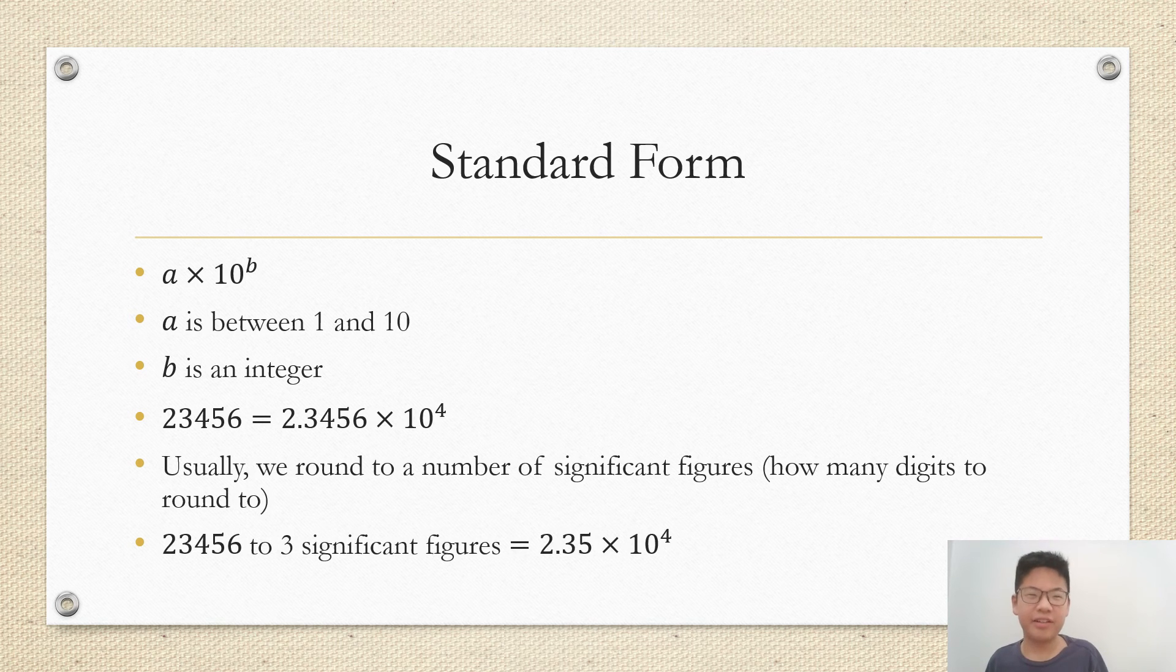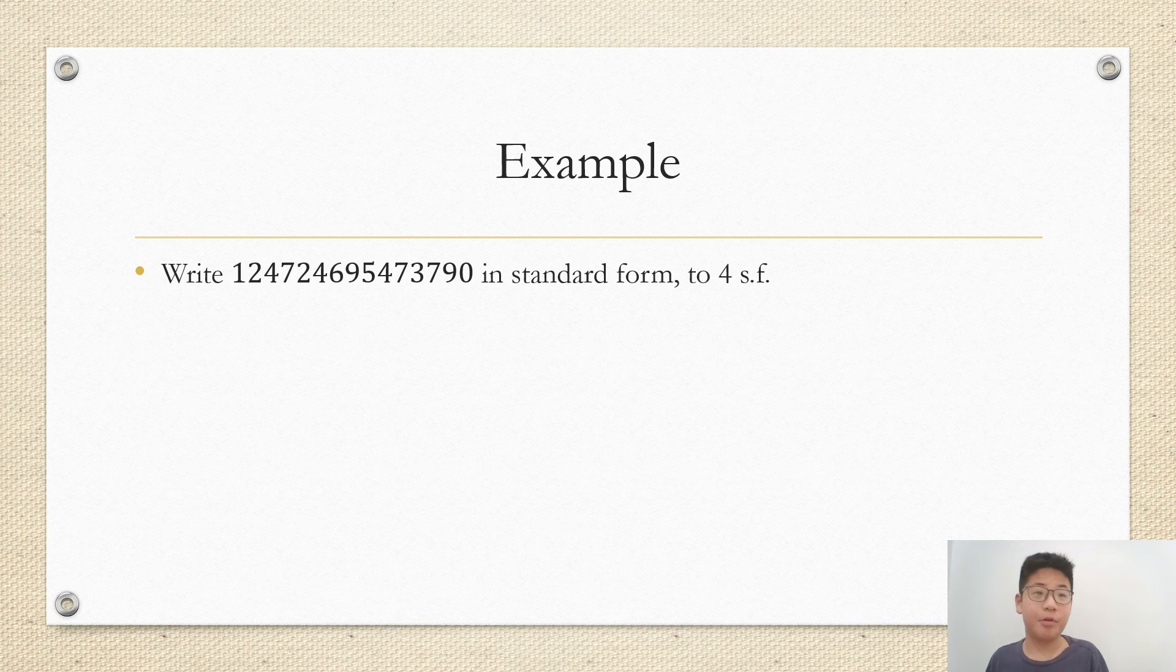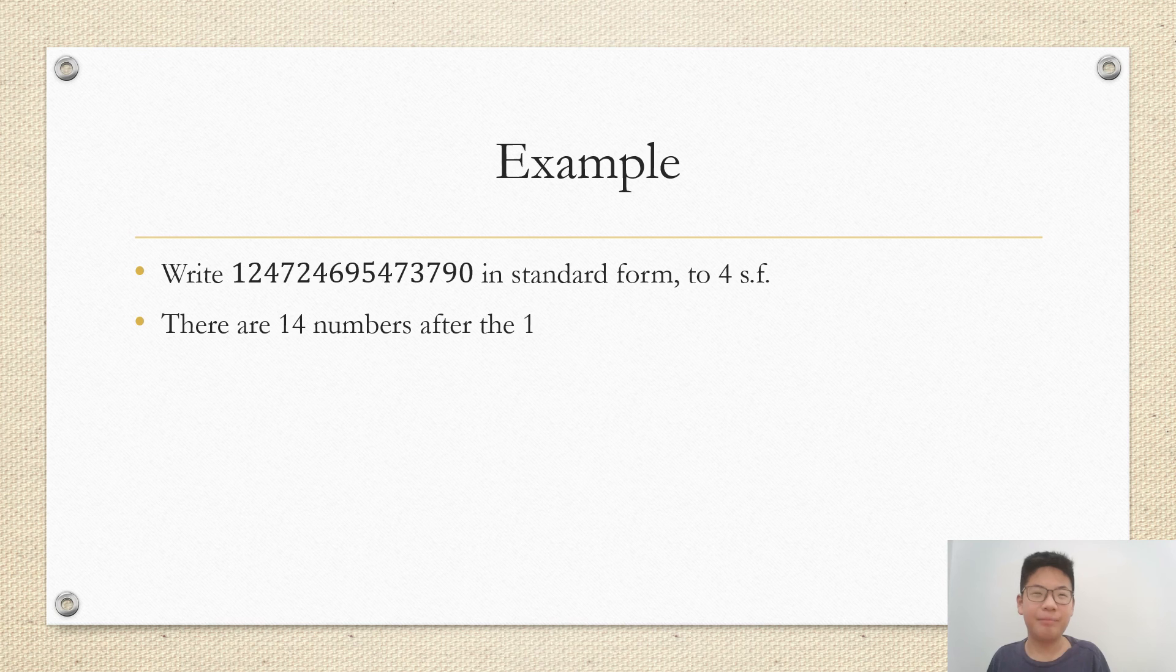23446 to 3 significant figures is 2.35 times 10 to the power of 4. Example: write this number in standard form to 4 significant figures. SF simply means significant figures. There are 14 numbers after the one. So the first four numbers for SF is 1247.